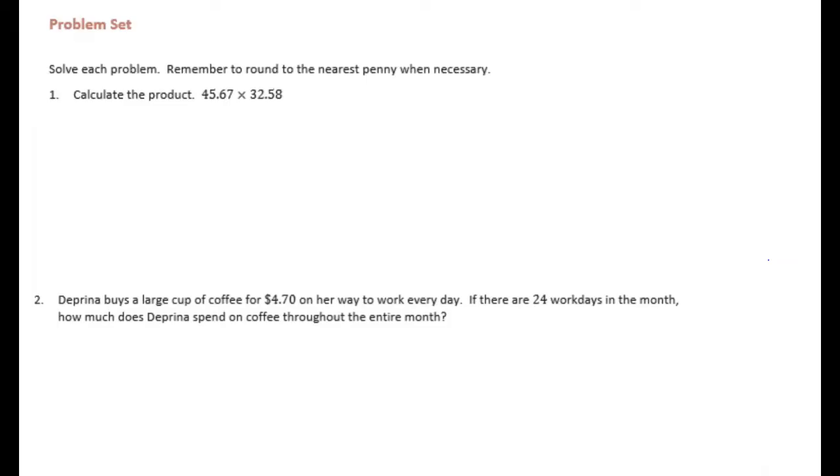Calculate the product: 45 and 67 hundredths times 32 and 58 hundredths. Let's start with the 8.